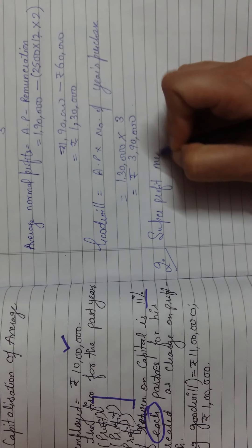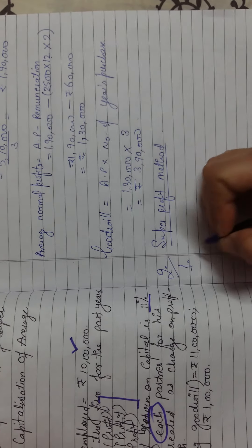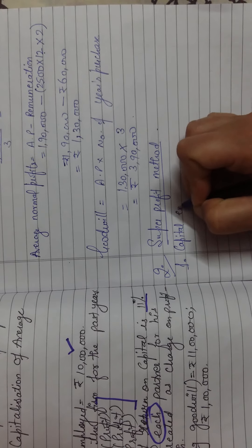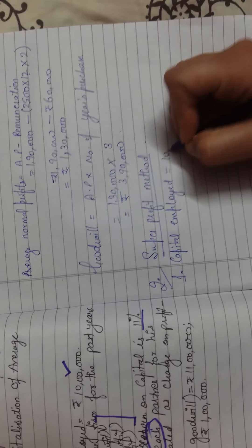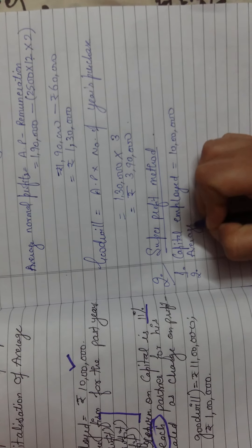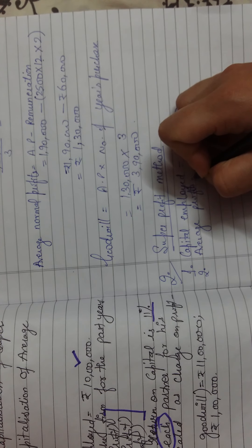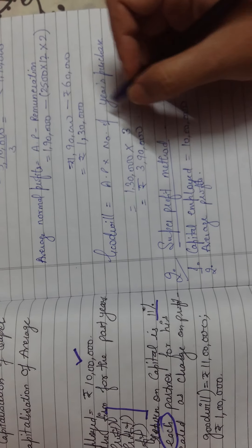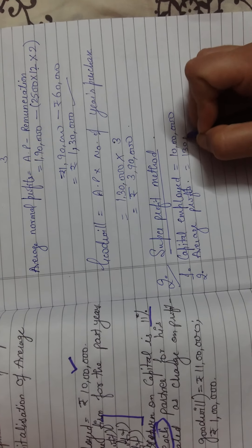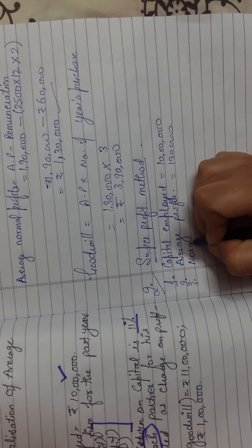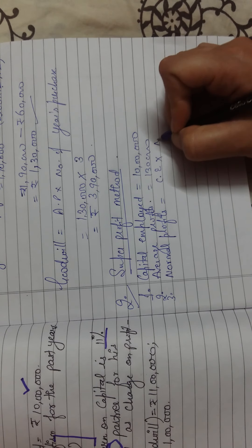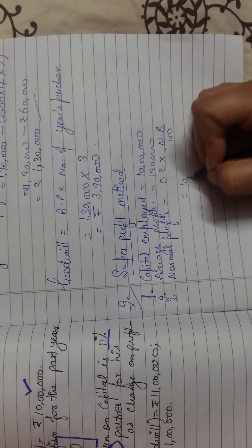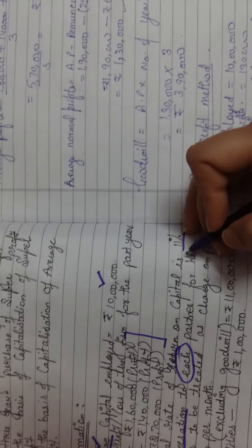Second is the super profit method. Step one: calculate capital employed. The value of average capital employed is already given in the question as ten lakh. Step two: the average profit is already calculated as one lakh thirty thousand. Step three: calculate normal profit. Normal profit equals capital employed multiplied by normal rate divided by one hundred. Capital employed is ten lakh and the normal rate is eleven percent.